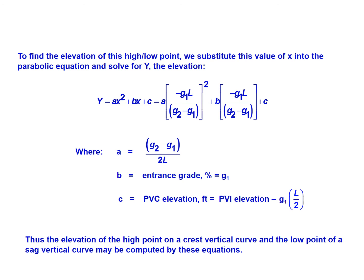So with a crest vertical curve, we're looking for the high point. For a sag vertical curve, we're looking for the low point. And we can use these equations to determine x, which is the distance along the vertical curve where the high or low point occurs, and then Y is our elevation. So we can actually determine the location and elevation of that high or low point.